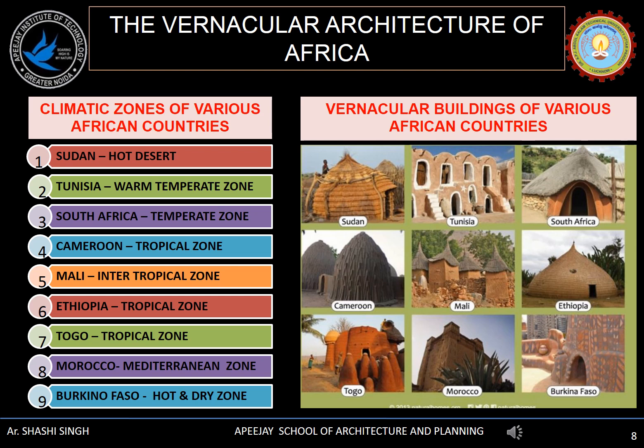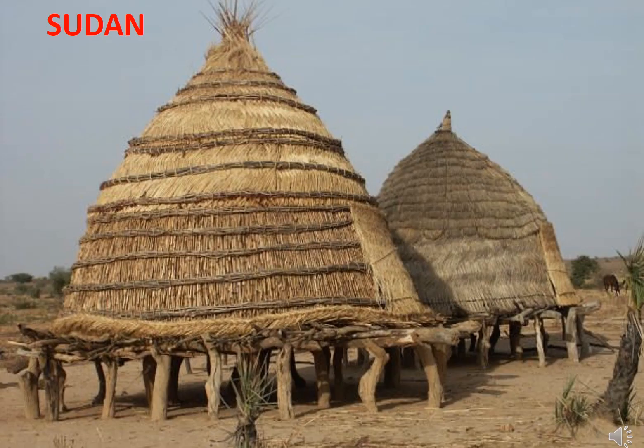Starting with Sudan. Sudan comes under the hot desert zone. The vernacular building in Sudan is called Tukul. Sudan is a country located in north-eastern Africa. The name Sudan is derived from the Arabic word 'Bilad al-Sudan', which means land of the blacks. Sudan was under colonial rule for more than a century and then became independent. It was earlier the largest African country with a land area of 8% of total African land and 2% of total land of the world. Sudan is one of the poorest and least developed countries in the world, with one-third of its population depending on farming and animal husbandry for livelihood.